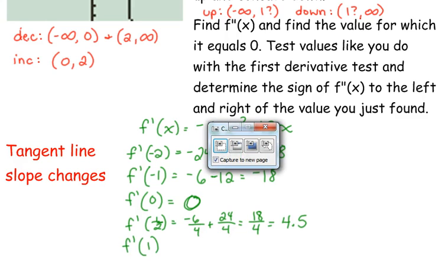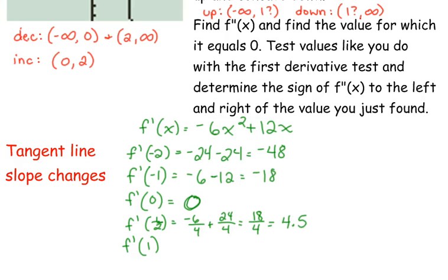F prime of 1. When we plug in 1, we get negative 6 plus 12, which is positive 6. So what has occurred over this interval is the slopes of our tangent lines have gone from very negative all the way to 0 to more and more positive. The slopes of the tangent lines are increasing.